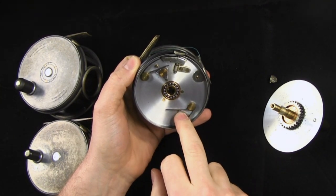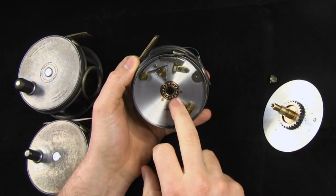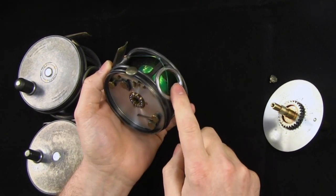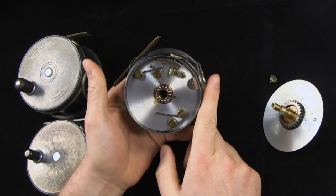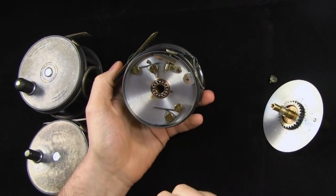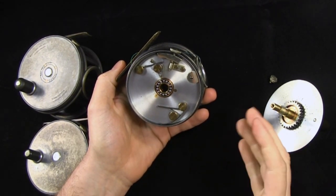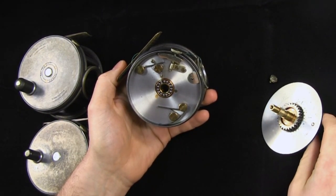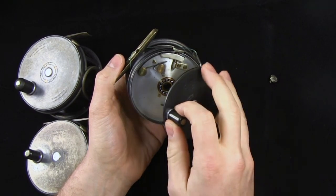The spare, you can see, is non-engageable. Bearings inside, you'll see the set for the line guard. This is a pretty clean example of a pre-war, late 1930s, early 1940s Hardy perfect 3.5 inch salmon.